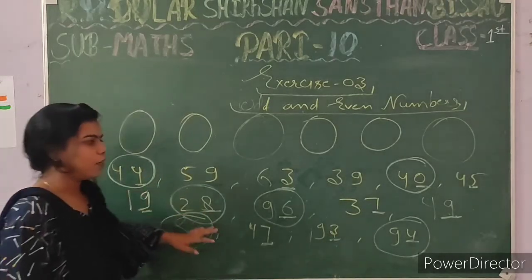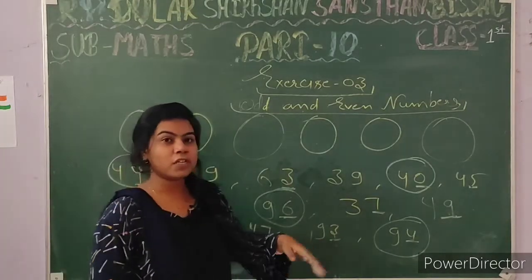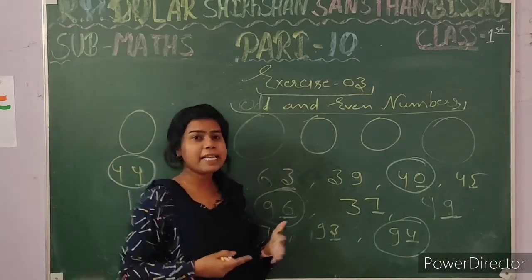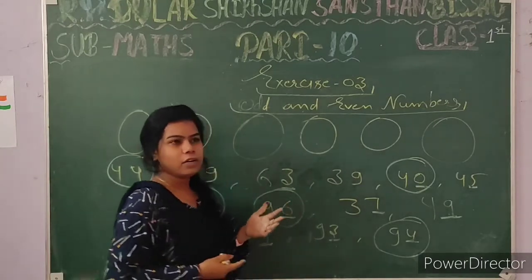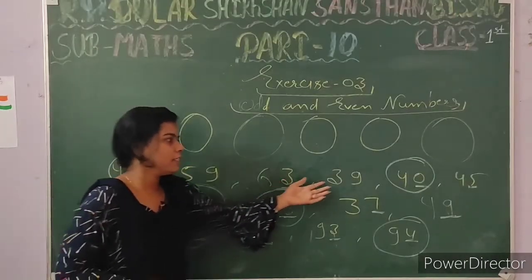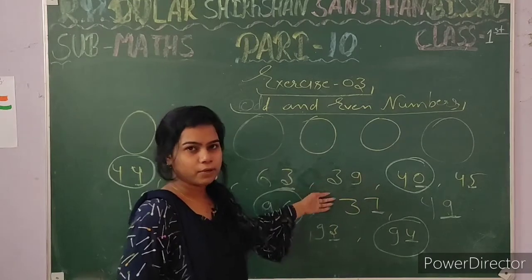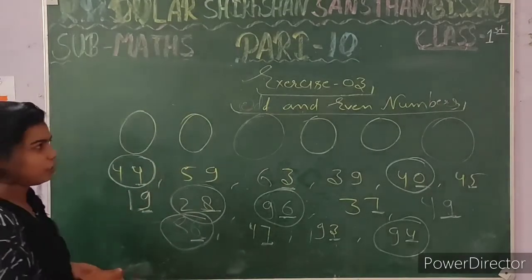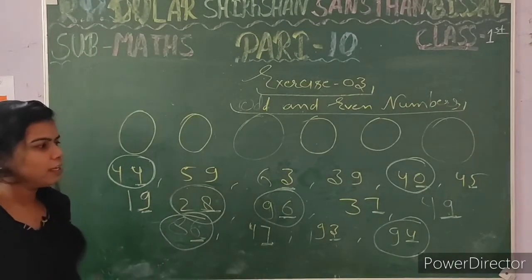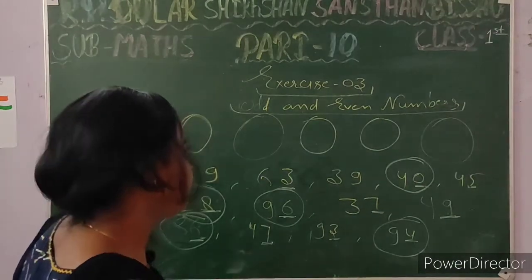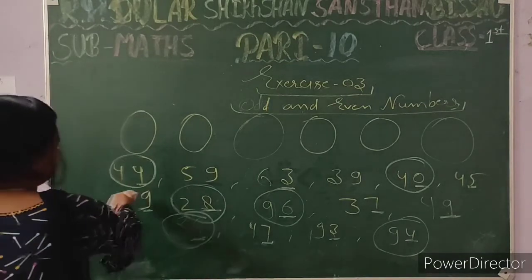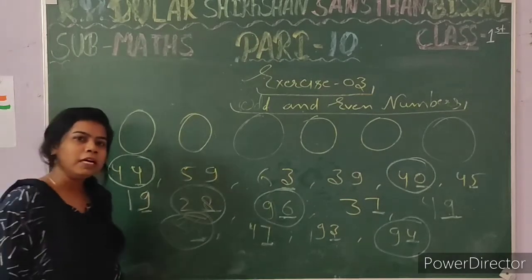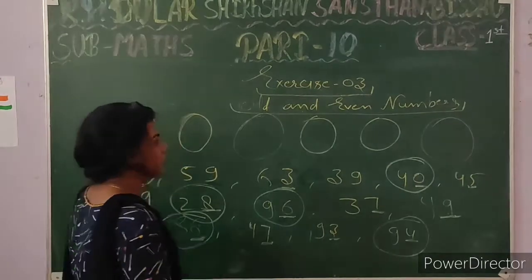In our question, the instruction is to encircle the even numbers, not the odd numbers. But if the question says encircle the odd numbers, then we encircle the odd numbers, not the even numbers. This type of question is in your Exercise 3, Question 3. You can easily do it — there are some numbers given in Question 3, and you encircle the even numbers.